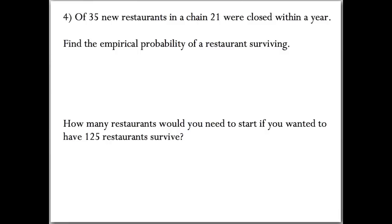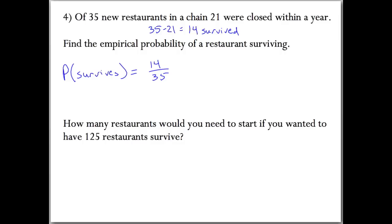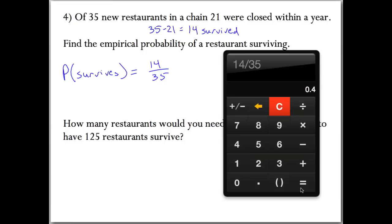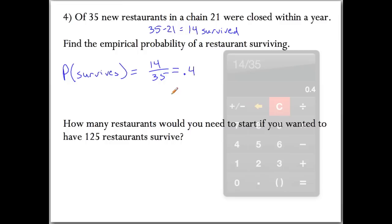Our next example: of 35 new restaurants in a chain, 21 were closed within a year. Find the empirical probability of a restaurant surviving. Since 21 closed, we do 35 minus 21, so 14 survived. The probability of survival is 14 out of 35 restaurants, which equals 0.4, or 40% survive.